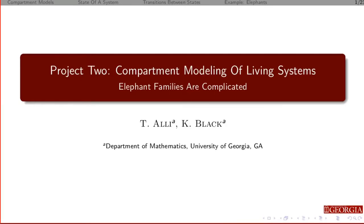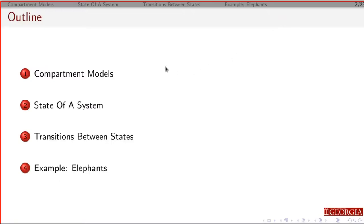The second project is going to be how to use linear models to approximate living systems, and we're going to look at particular populations of a particular species. We'll first talk about compartmental models — what it means to divide up a population into different groups — then how we express the state of a system, how individuals transition between different states, and finally we'll go through an example for elephants.